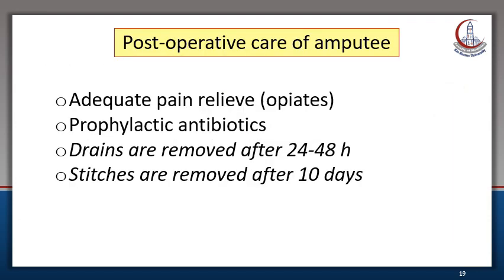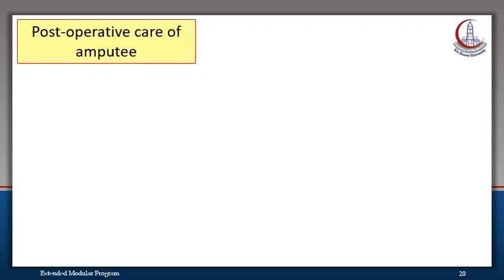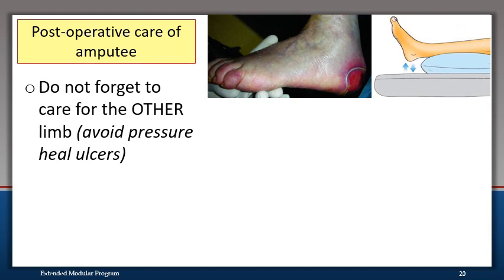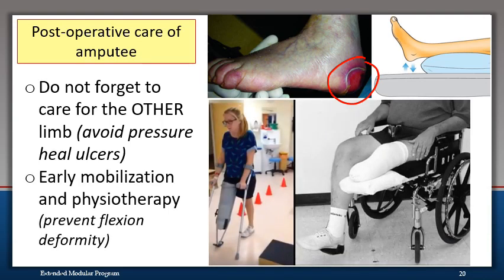For all patients undergoing major amputation, post-operative care includes adequate pain relief — we usually use opiates — and prophylactic antibiotics. Drains are removed after 24 to 48 hours, and stitches are removed after 10 days. Do not forget to care for the other limb and avoid pressure ulcers, usually by elevating the limb over a pillow. Early mobilization and physiotherapy to prevent flexion deformity is of great importance.